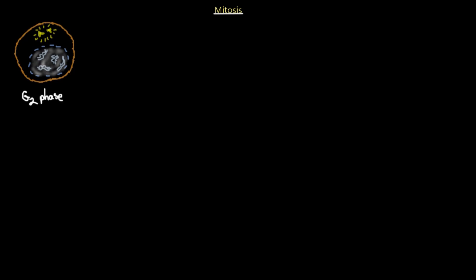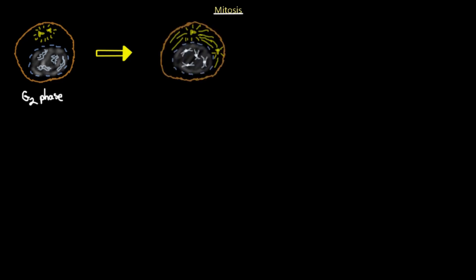Also notable is the doubling of the centrioles within the centrosome. As you can see, there are now two of these barrel-like structures in the cell — they have doubled. That happens during the G2 phase as the cell prepares for mitosis. Now we're going to move along to the next stage: what happens as soon as the cell passes the G2 phase and enters mitosis.